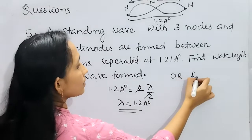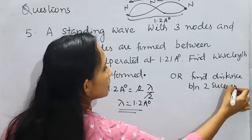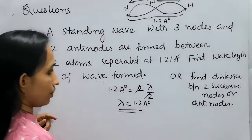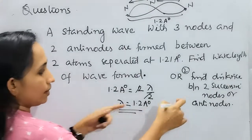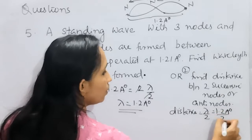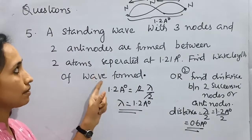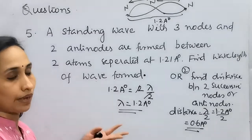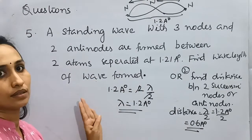Another possible question: find the distance between 2 successive nodes or anti-nodes. Lambda is 1.2 Å. The distance between 2 successive nodes or anti-nodes is λ/2 = 1.2/2 = 0.6 Å. Always try to draw the pattern whenever number of nodes and anti-nodes are given — it is applicable for all types of stationary wave questions.